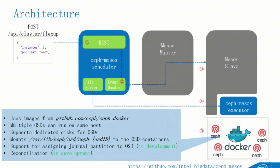With a local repository, the download speed will be much faster. We actually did some testing on that — if you have a local repository for your Docker image, it usually takes just tens of seconds to launch a small cluster. We have the data on the next slide.